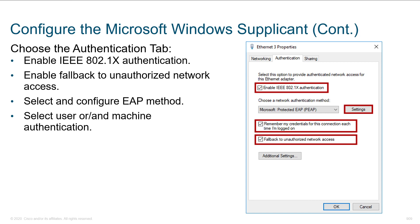Here we are on the actual Ethernet port, enabling .1x. We're specifying the EAP method that we want to use. Remember, the AnyConnect client is going to have more EAP methods available and gives you quite a bit more configuration options. But this is nice because we don't need any additional software. If you have a challenge or restriction where you can't add the AnyConnect client, make sure within ISE that you're supporting EAP methods that Windows, Linux, and OSX are willing to support.